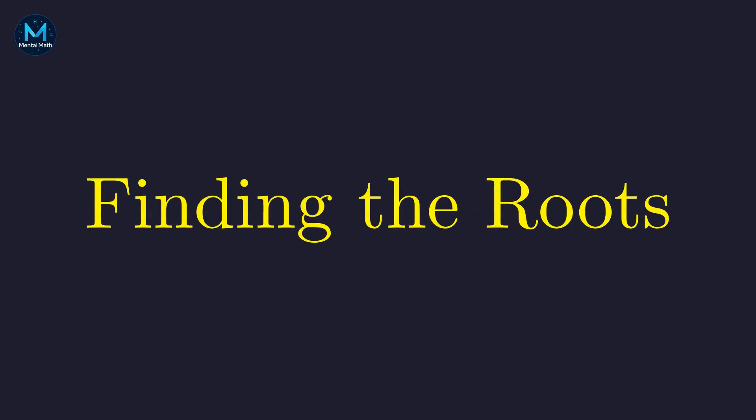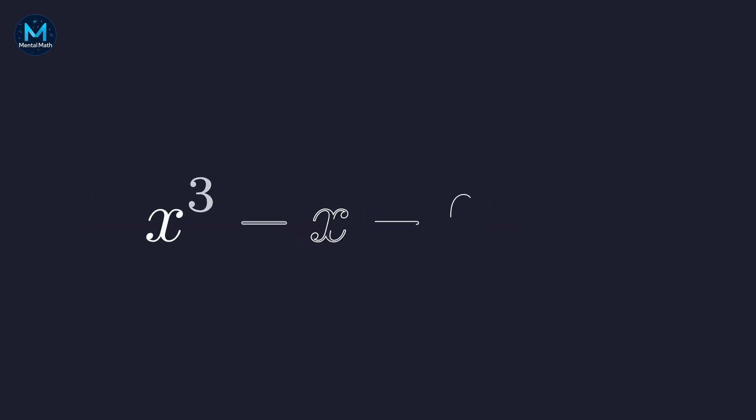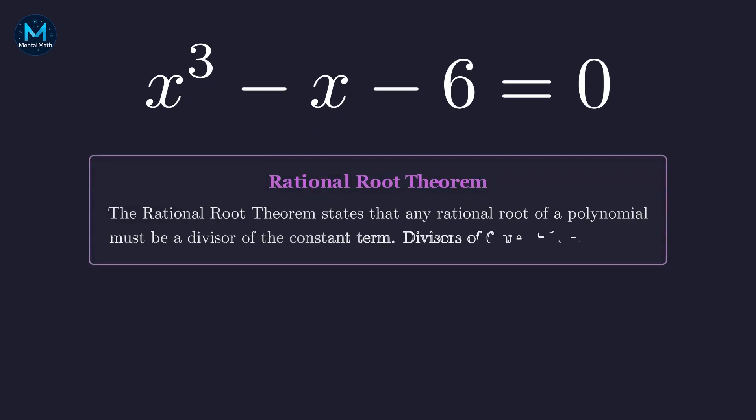Now we have a cubic equation. How do we solve it? For polynomials with integer coefficients, there's a handy tool for finding rational roots. The rational root theorem says that any rational solution must divide the constant term, which is negative 6. That gives us a short list of candidates to test.